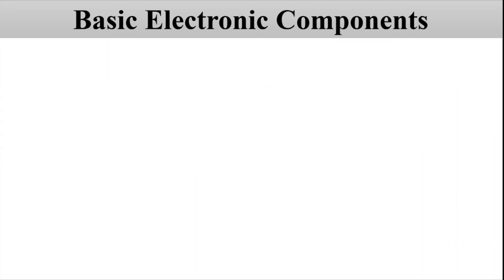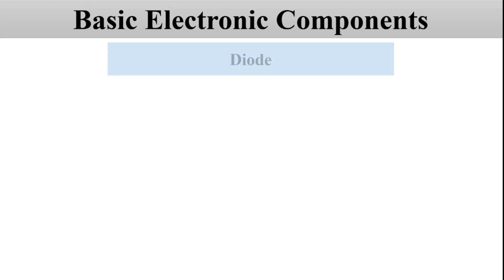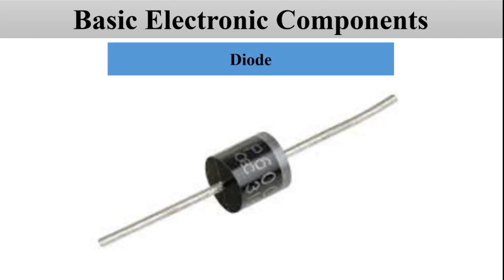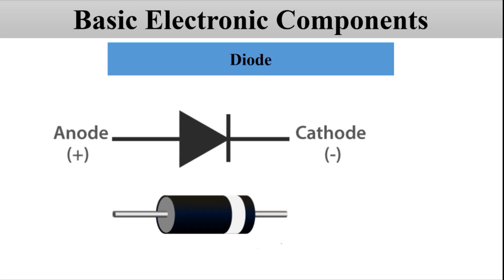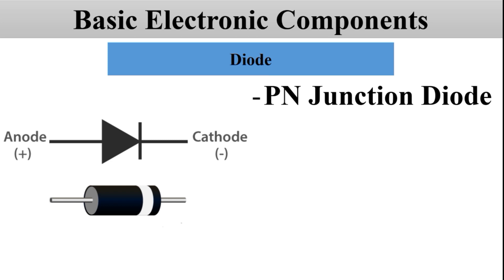Our next component is the diode. On the screen you can see how a diode looks like — the first one is the electrical symbol of the diode and the diagram below shows how a typical diode looks; it is mostly black in color with a white strip on one side. A diode is known as the p-n junction diode because when a p-type semiconductor is suitably joined to an n-type semiconductor under suitable conditions using a special technique, it forms a p-n junction, and the device so constructed is called a p-n junction diode or semiconductor diode.